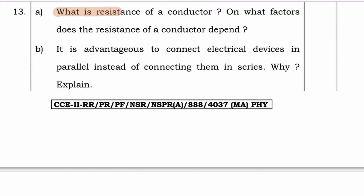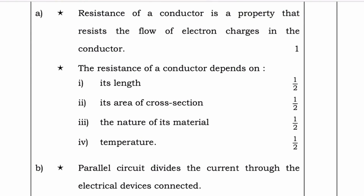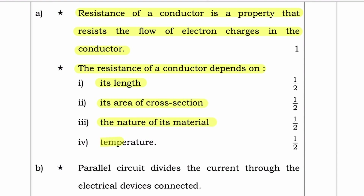What is resistance of a conductor? On what factors does the resistance of a conductor depend? Answer: Resistance of a conductor is a property that resists the flow of electrons and charges in the conductor. The resistance of a conductor depends on its length, its area of cross section, the nature of its material, and temperature.